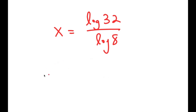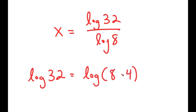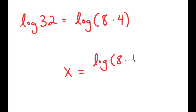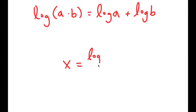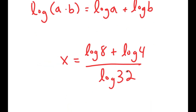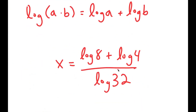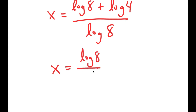Now, log of 32 is the same thing as log of 8 times 4. So I get log of 8 times 4 over log of 8. And if I have something in the form log of a times b, this is equal to log a plus log b. So in this case, this is going to equal log of 8 plus log of 4, and I have this over log of 8. This turns into log 8 over log 8 plus log 4 over log 8.